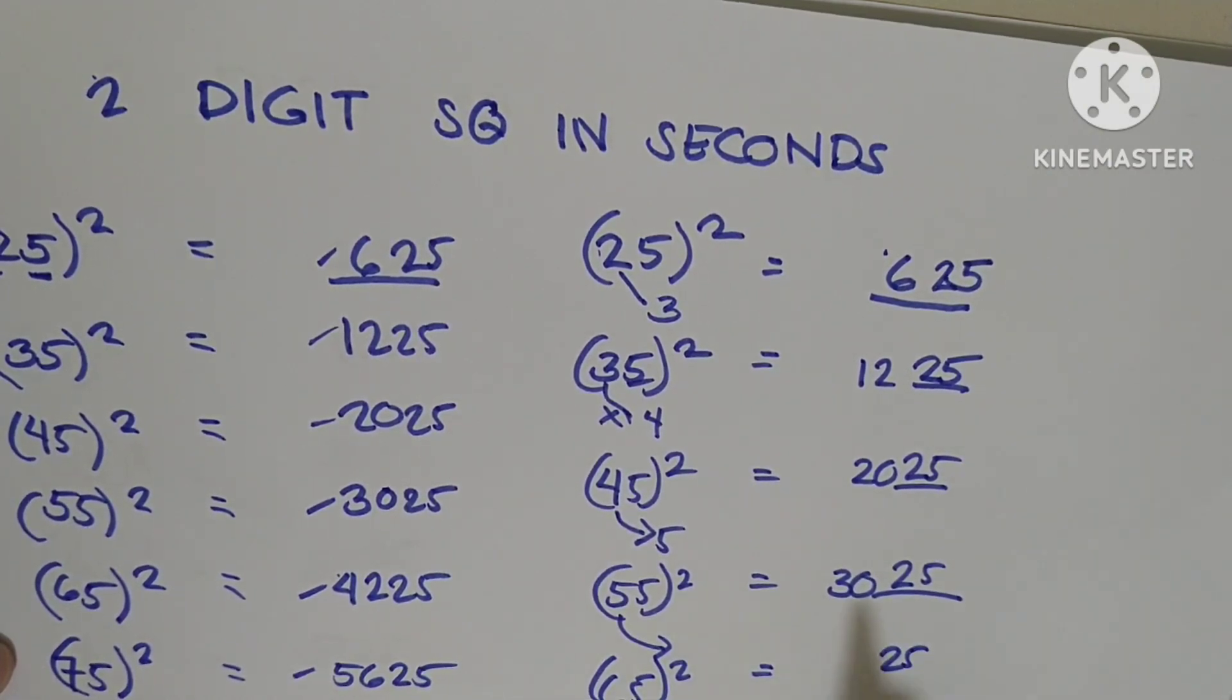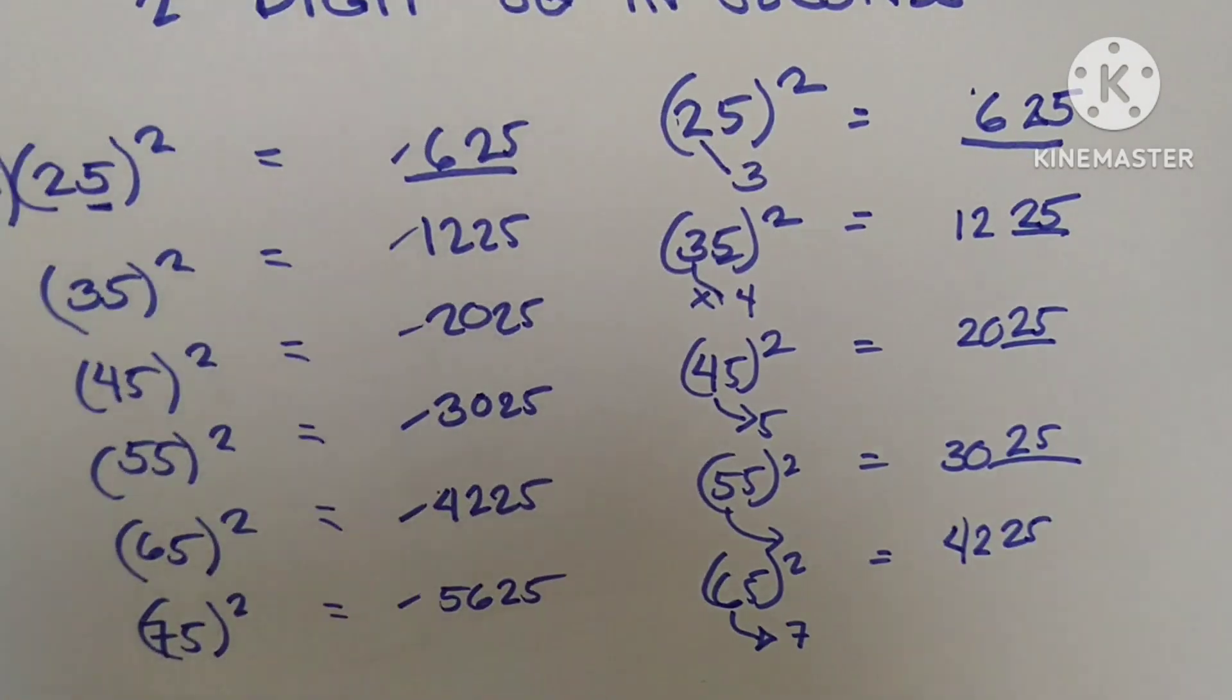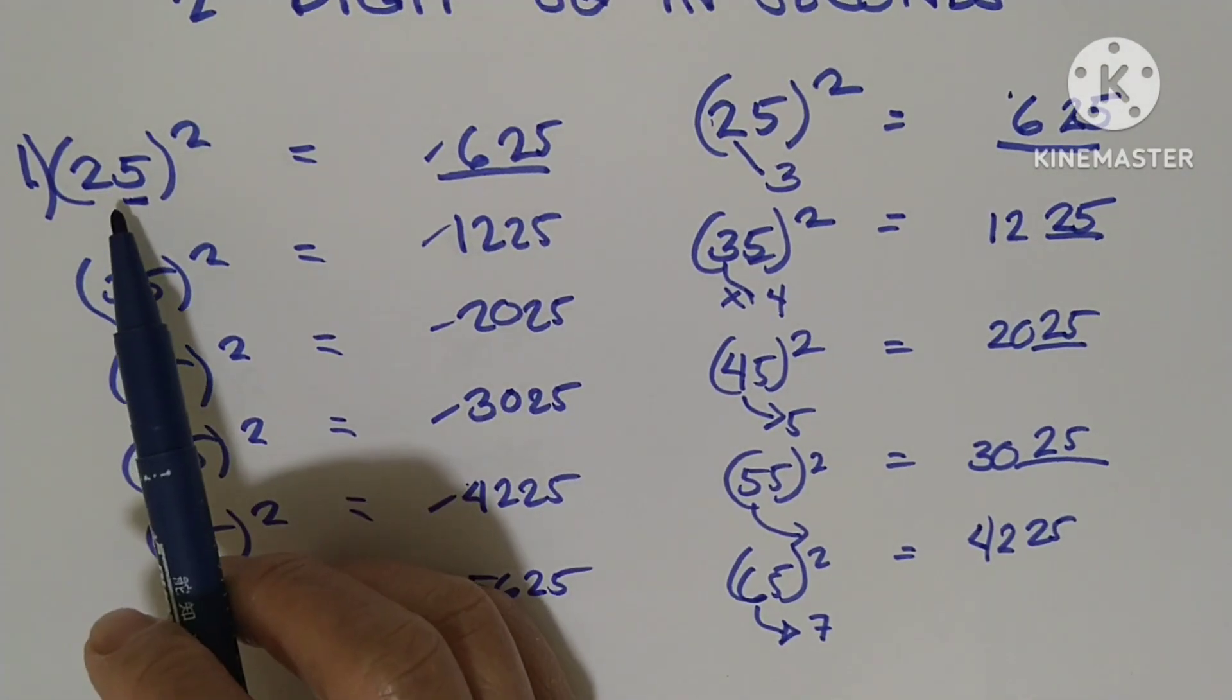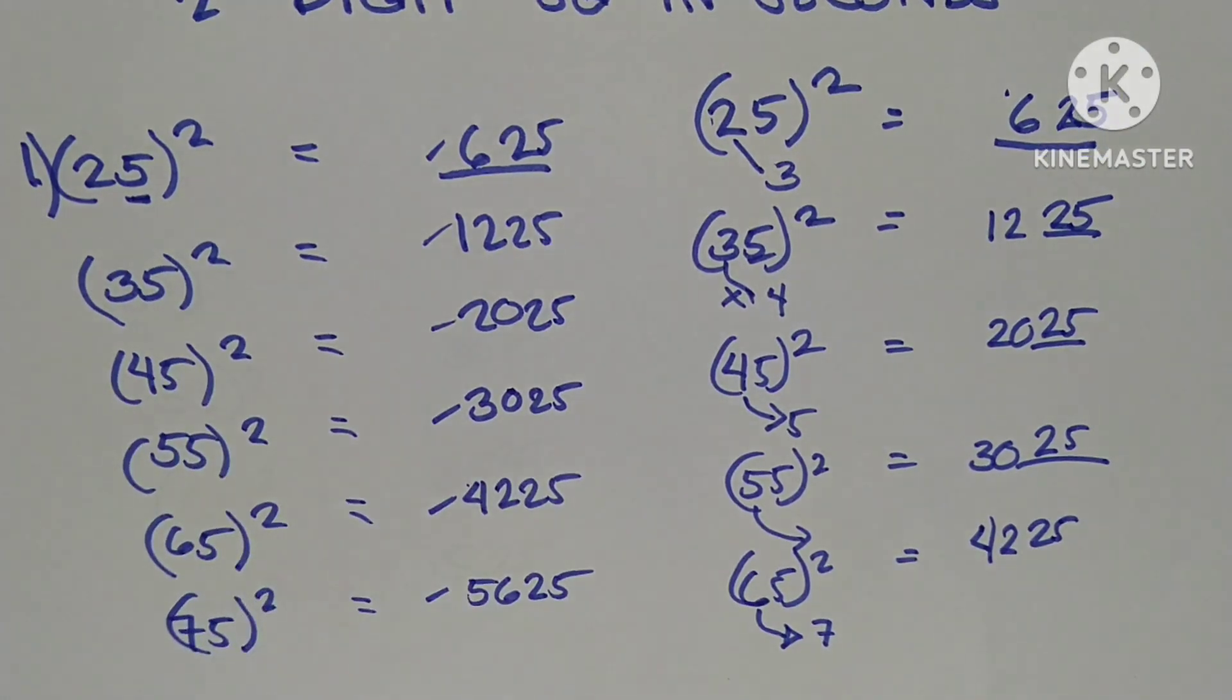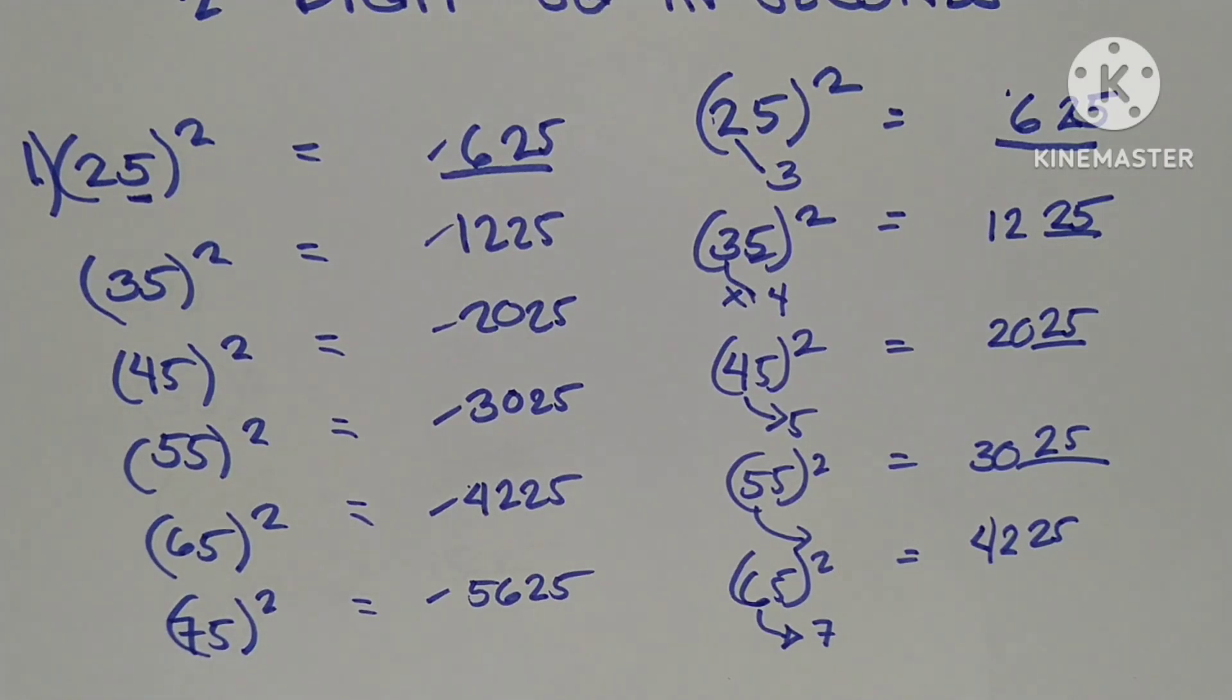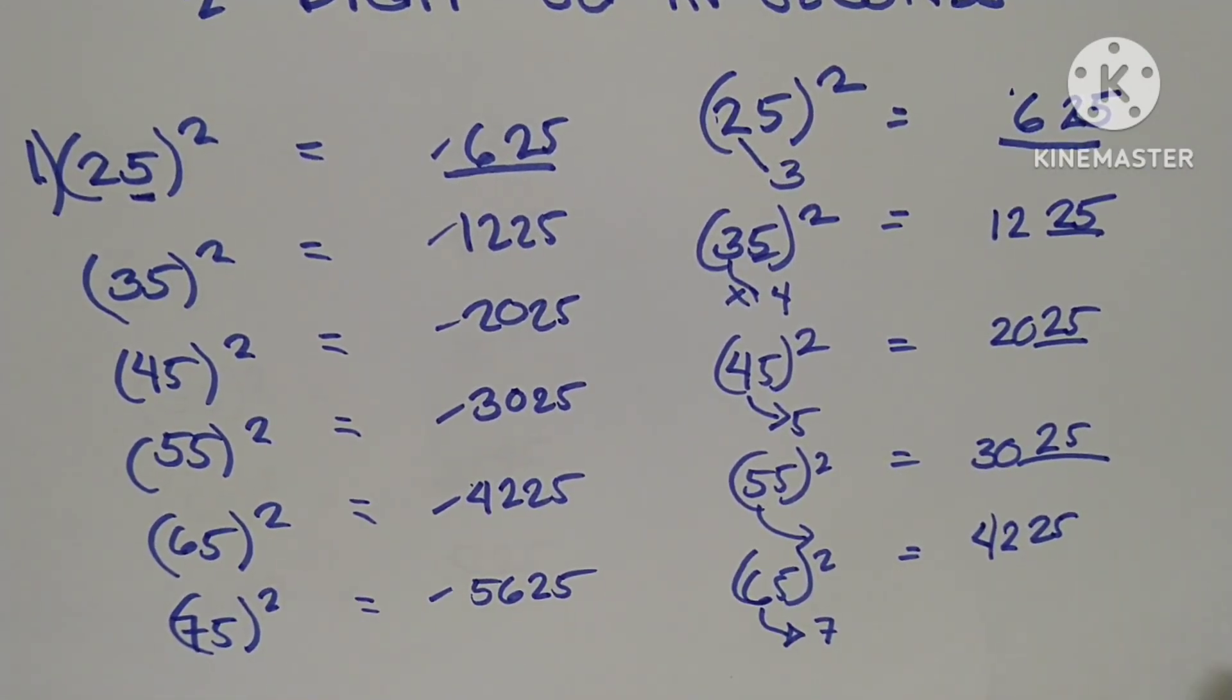So this is a very easy way for how to compute two-digit squares. If it is hard for you to compute mentally these two-digit squares, you can use this technique. You can use this method to make it easy for you to compute.